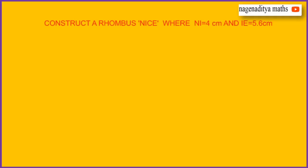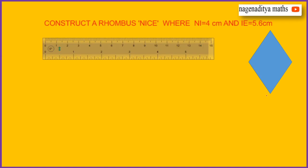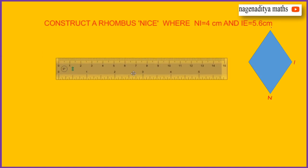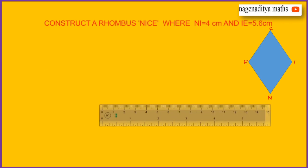Construct a rhombus NICE where NI is equal to 4 centimeters and EI is equal to 5.6 centimeters. First, our rough diagram is going to show this. This is the rough diagram — NICE. First we have to draw EI. EI is equal to 5.6 centimeters line segment.